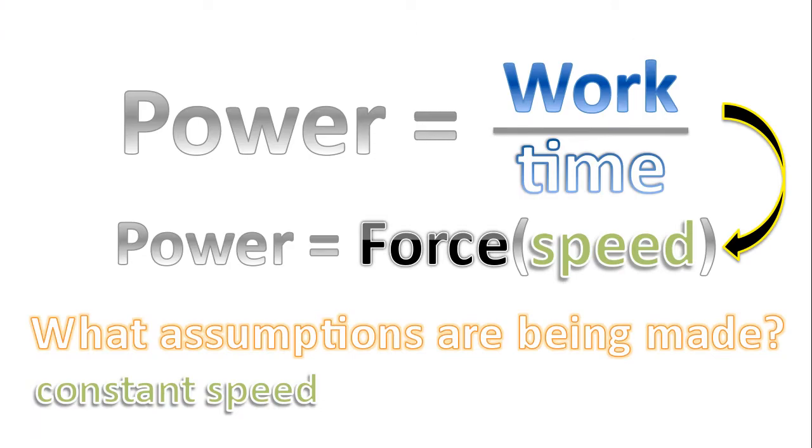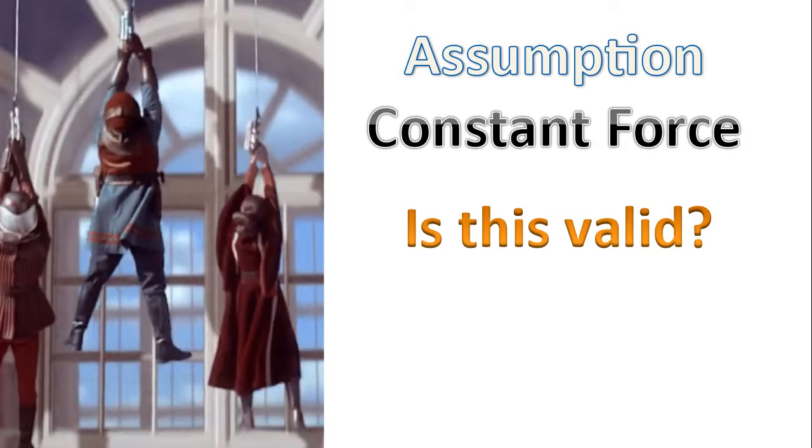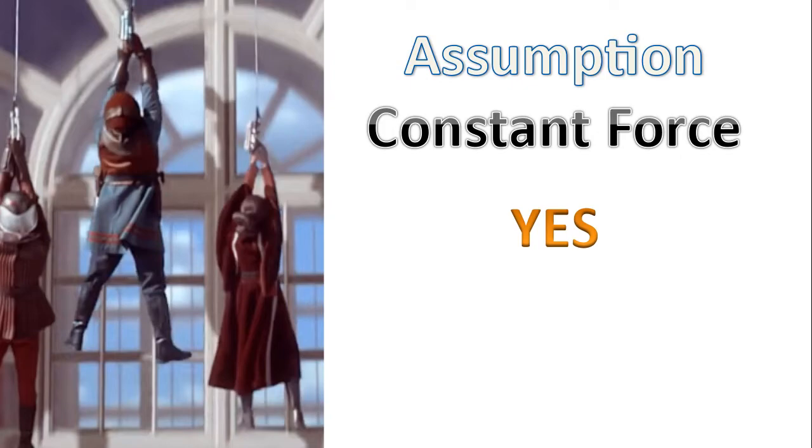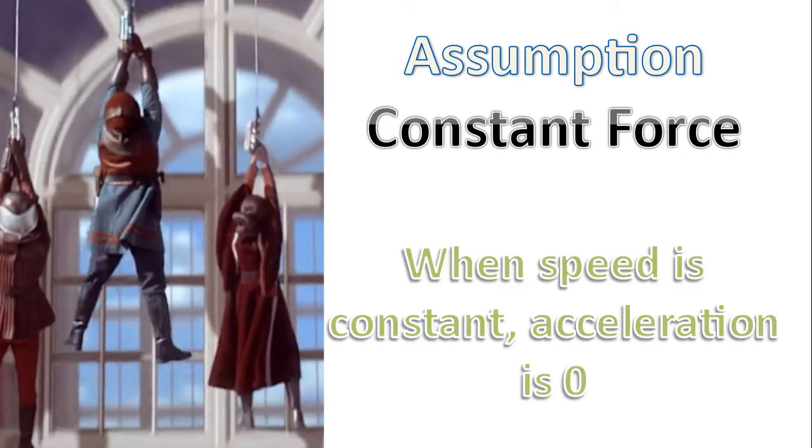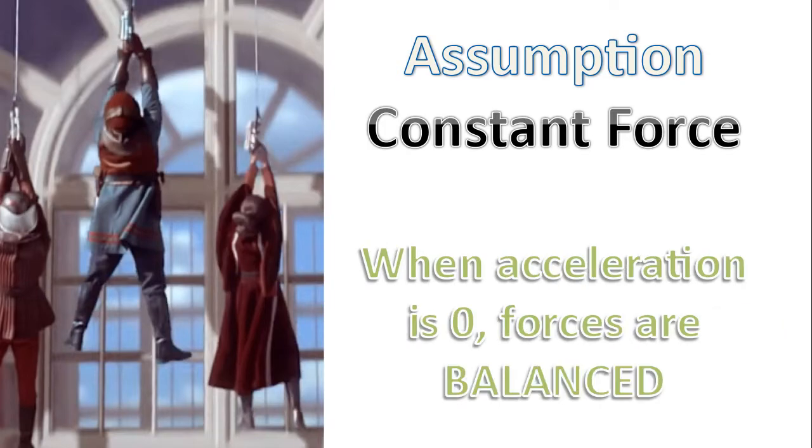And so one of the assumptions being made when we derive the formula power equals force multiplied by speed is that the person is being lifted at a constant speed. The next assumption is that the person is being lifted at a constant force. Is this valid? And the answer is yes. When the speed is constant, by definition we know the acceleration is zero. And when the acceleration is zero, all the forces are balanced.